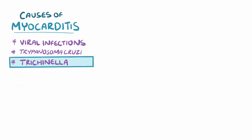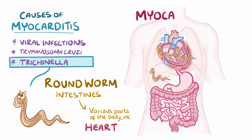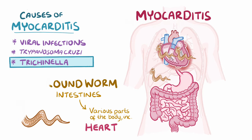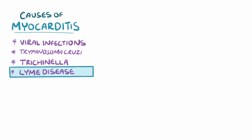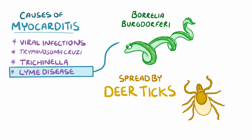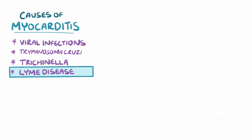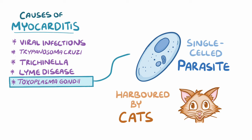There's also Trichinella, a roundworm that moves from the intestines into various parts of the body causing a variety of problems, including myocarditis. Myocarditis can also be seen in Lyme disease, which is caused by the bacteria Borrelia burgdorferi, spread by deer ticks. Finally, in immunocompromised individuals, there's Toxoplasma gondii, a single-celled parasite harboured by cats that can cause myocarditis.